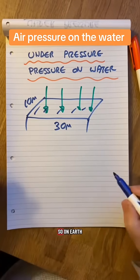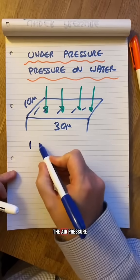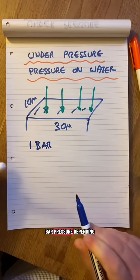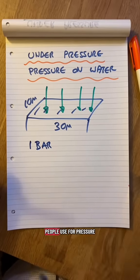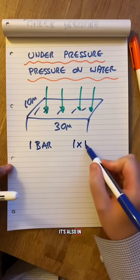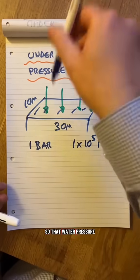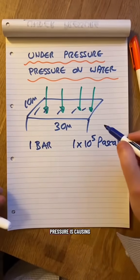Due to weather and things like that, on Earth the air pressure is about one bar depending where you are. That's what some people use for pressure. It's also in pascal, 1×10^5 pascal. So that air pressure is causing a force on this water.